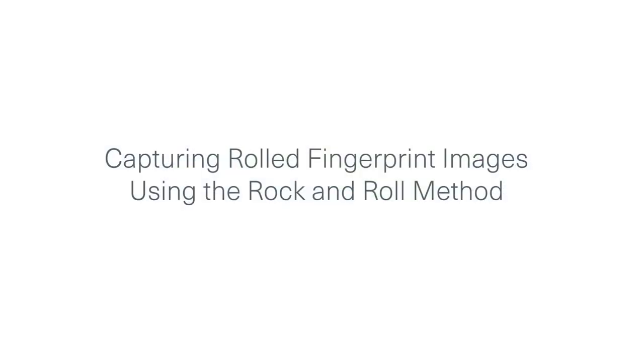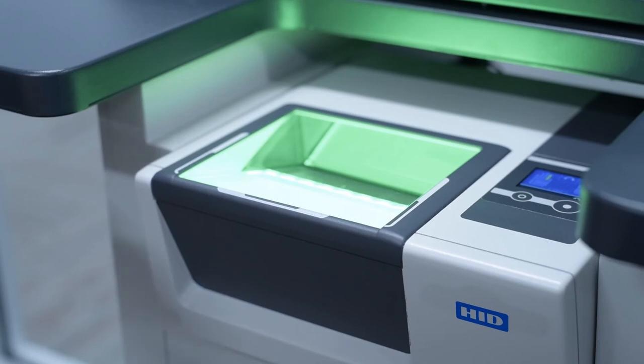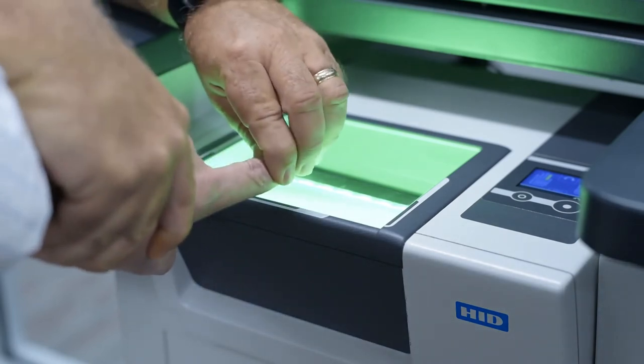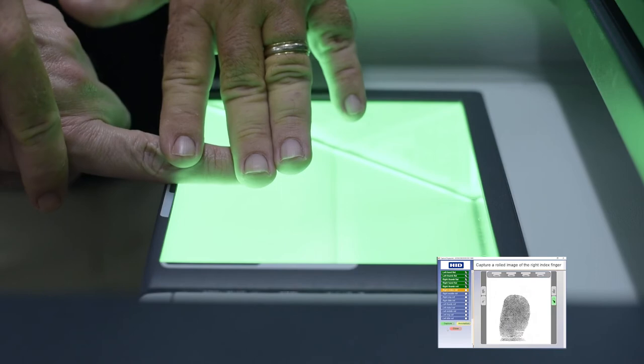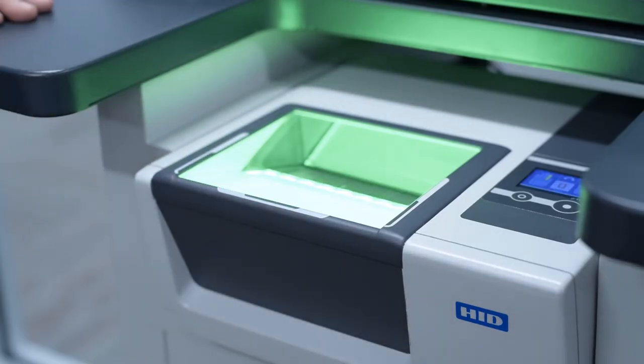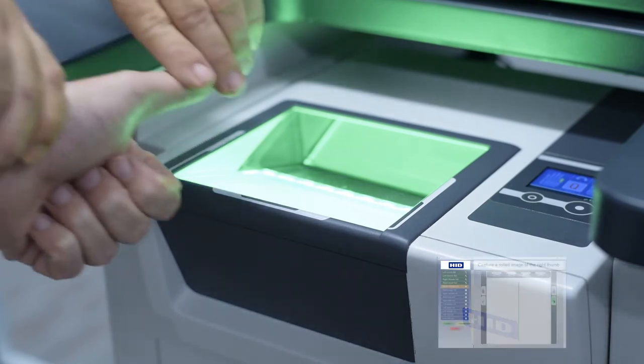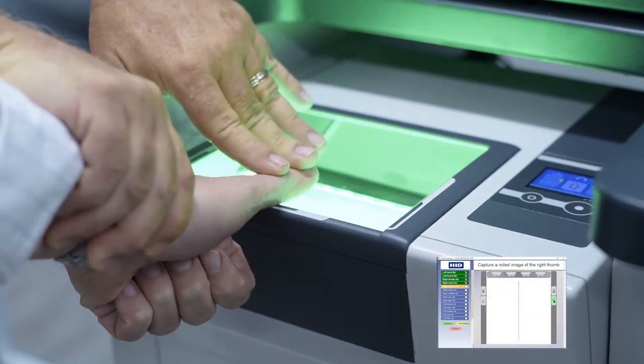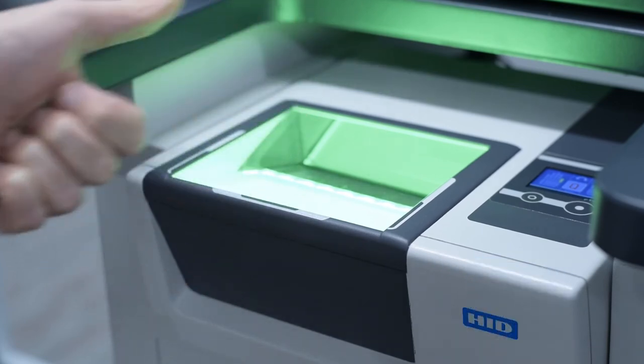Capturing fingerprints using the rock and roll method: to avoid uneven pressure lines across your captured image, notice first in this example that the finger is first placed down on the platen then rolled to the side. This method is called the rock and roll nail to nail method and will help you to maintain an even pressure throughout the rolling procedure.